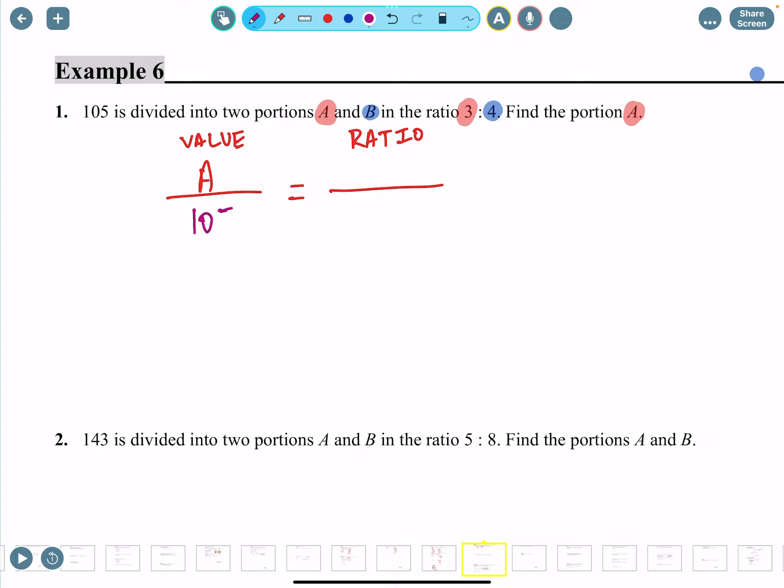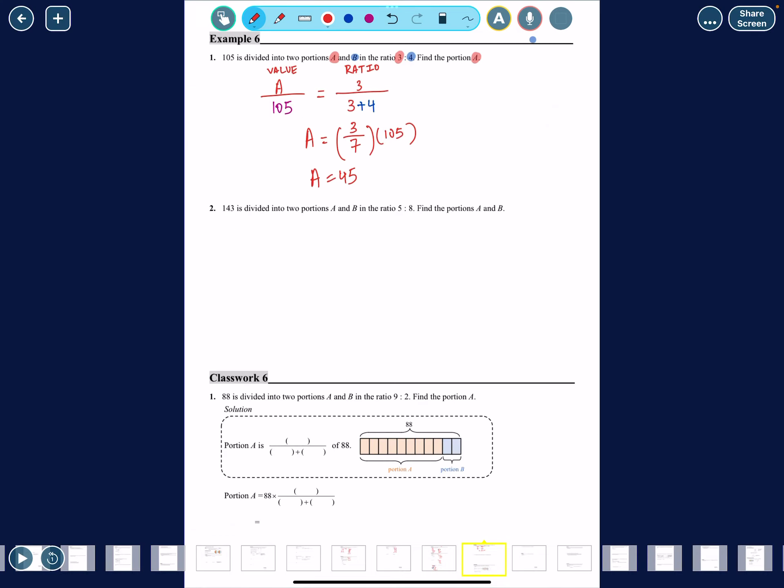In total you have 105. The ratio for A is 3, while the ratio for purple is 3 plus 4. You want to calculate this first before you do multiplication. Make it 3 out of 7 first, then move 105 to the right side. 3 divided by 7 times 105 is 45, so A is 45.